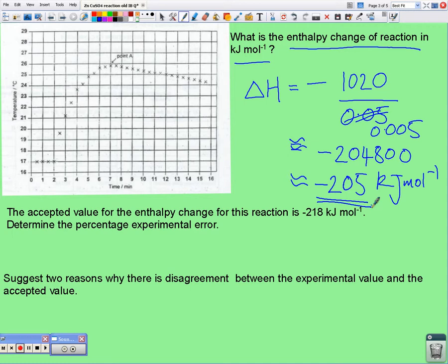Actually, though, if we really think about the question, if we go back to the temperature change we used, that only had two sig figs. So, strictly speaking, we might only want to give this value as minus 200 kilojoules per mole.